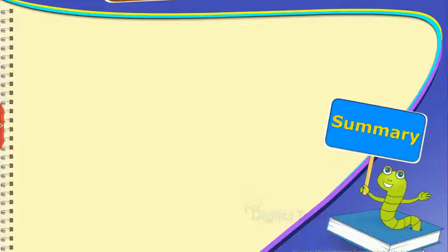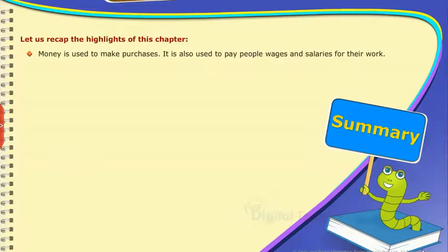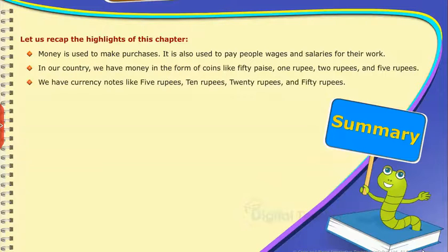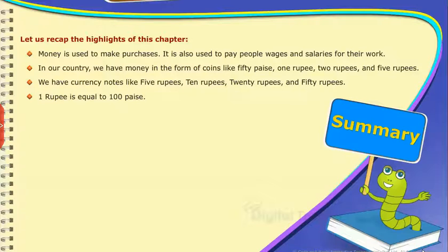Summary. Let us recap the highlights of this chapter. Money is used to make purchases and to pay people wages and salaries for their work. In our country, we have money in the form of coins like 50 paisa, 1 rupee, 2 rupees, and 5 rupees. We have currency notes like 5 rupees, 10 rupees, 20 rupees, and 50 rupees. 1 rupee is equal to 100 paisa.